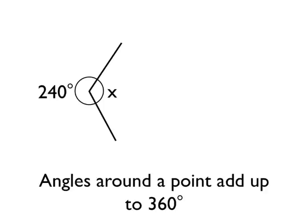Our angle rule is angles around a point add up to 360 degrees. The angles around the point here are 240 degrees and angle X. If we add those two together, we know that 240 + X must equal 360 degrees, so we can write this equation.